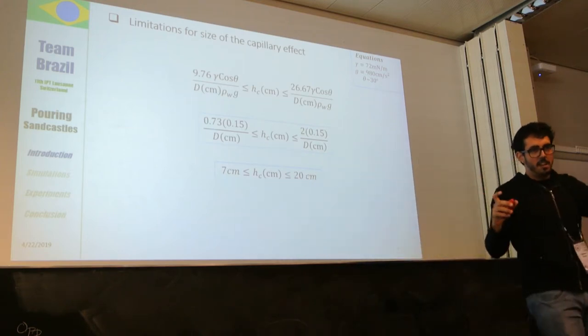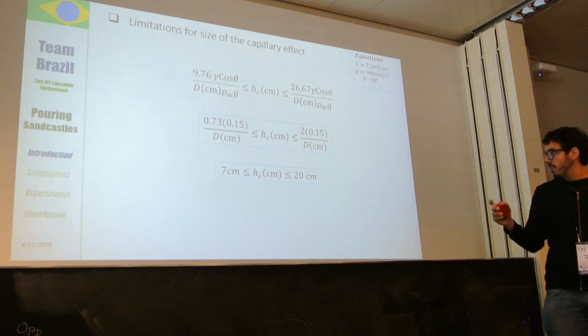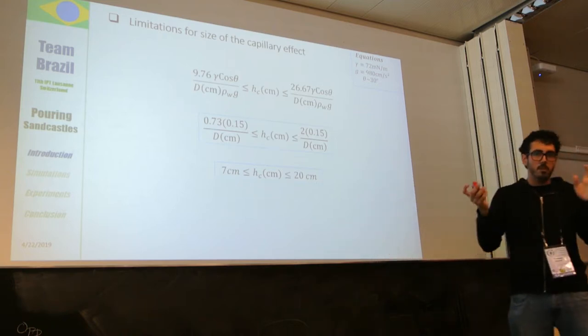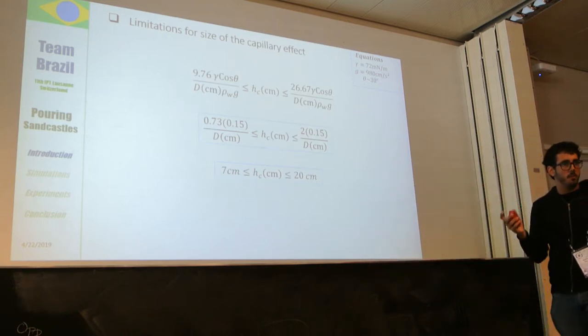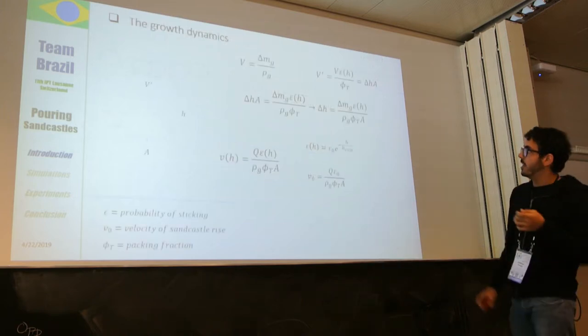Considering two types of sand we will use experimentally — 0.15 and 0.30 millimeters — we will have that these maximum heights will be between those two ranges: a minimum of 7 centimeters for the small grain size and a maximum of 20 centimeters for the larger grain radius.